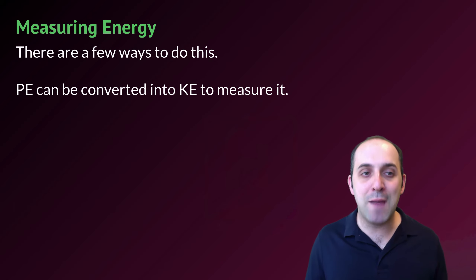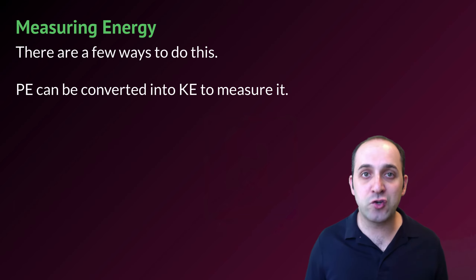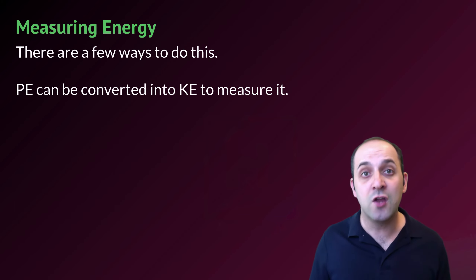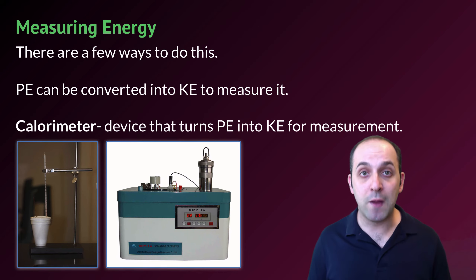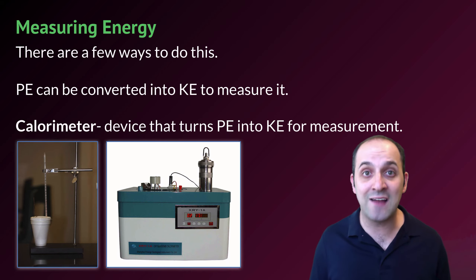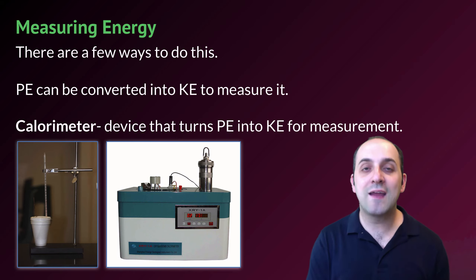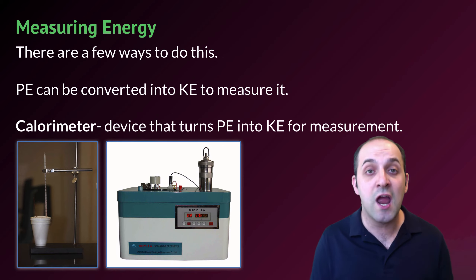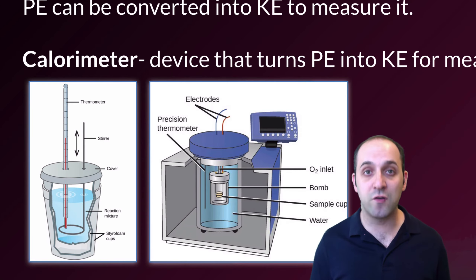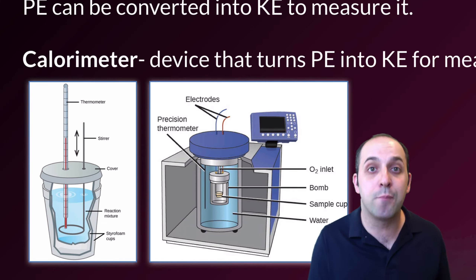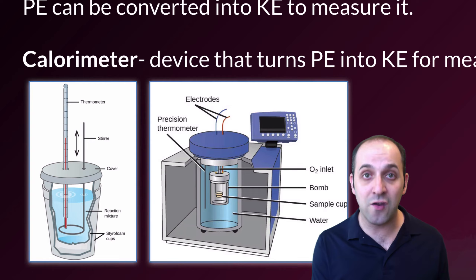As chemists, we're going to want to be able to measure energy. Generally speaking, in order to measure potential energy, we always convert it into kinetic energy first and measure that kinetic energy to know how much potential energy was stored. This process is known as calorimetry. A calorimeter is a device calibrated to allow a substance to go through a change and measure the change in energy that happens as a result. We'll talk more about calorimeters at the end of this unit.